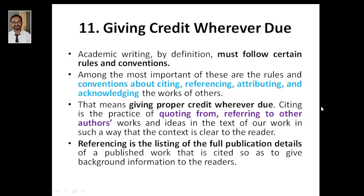Referring to other authors' works and ideas in the text of our work in such a way that the context is clear to the reader. For example, if I write a sentence like 'synthesis of silver nanoparticles can be done by bacteria, fungus, and even physical methods like CVD, PVD,' then I have to cite from where I got that knowledge. Any one of the papers that gave me that input — when I was reading and came to know that particular nanoparticles can be synthesized by this method — I can put one there, and in the reference the whole information will be given.